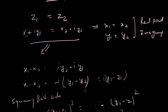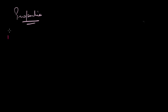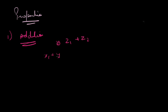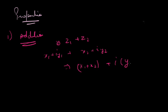So to equate two complex numbers, equate the real parts and equate the imaginary parts to get the answer. Now let's talk about properties. First, addition: to add z1 plus z2, which is (x1 plus iota y1) plus (x2 plus iota y2), simply add the real parts and add the imaginary parts: result is (x1 plus x2) plus iota (y1 plus y2).